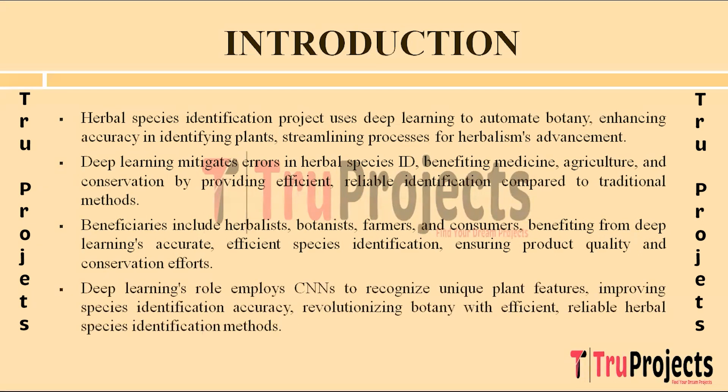Deep learning plays a pivotal role in this project by leveraging its ability to process vast amounts of data and extract intricate patterns and features. Through the use of convolutional neural networks and other deep learning architectures, the system can learn to recognize key characteristics and nuances unique to each herbal species, enabling accurate and reliable identification even from images with varying qualities and backgrounds. By combining deep learning with botanical expertise, this project aims to revolutionize herbal species identification for the benefit of various stakeholders.